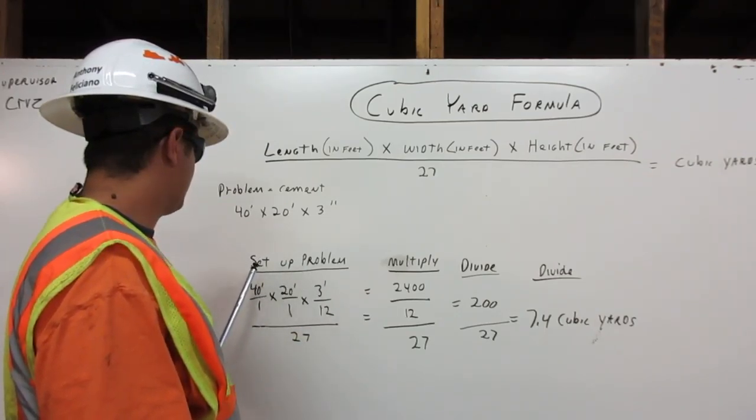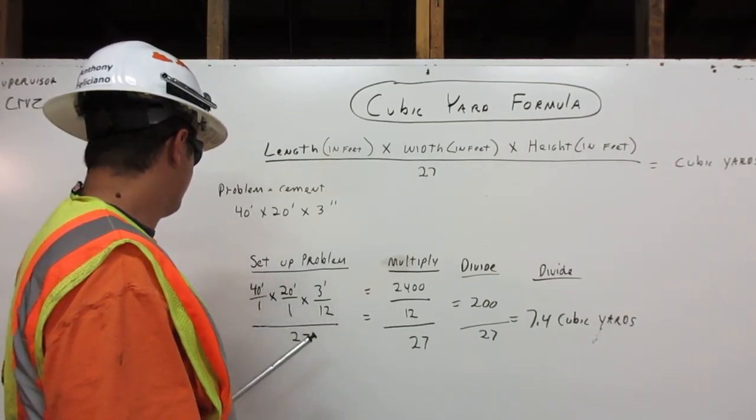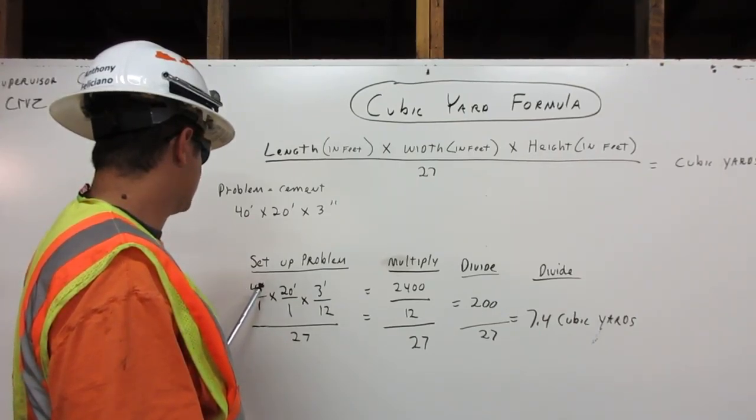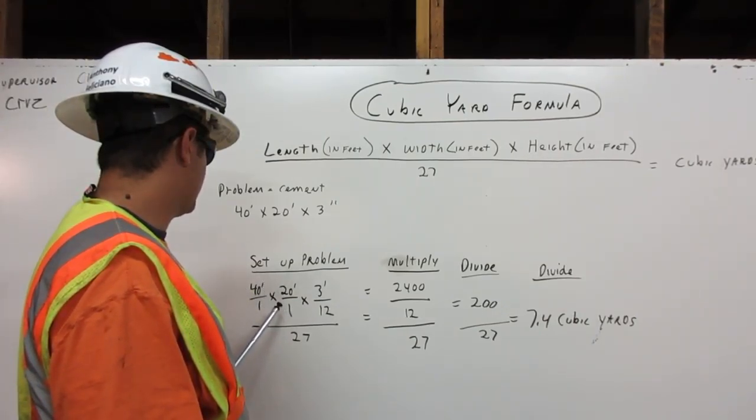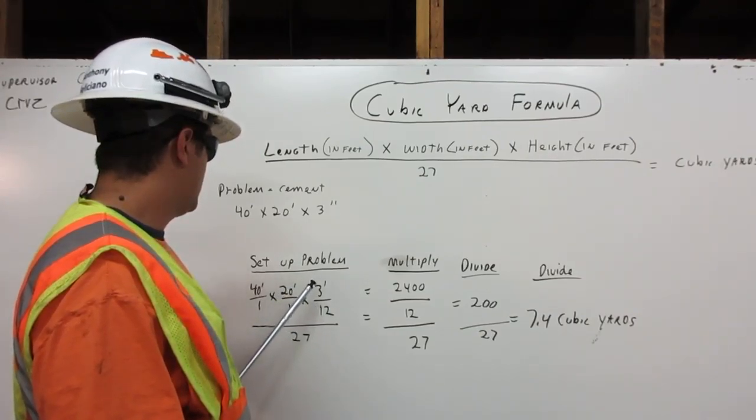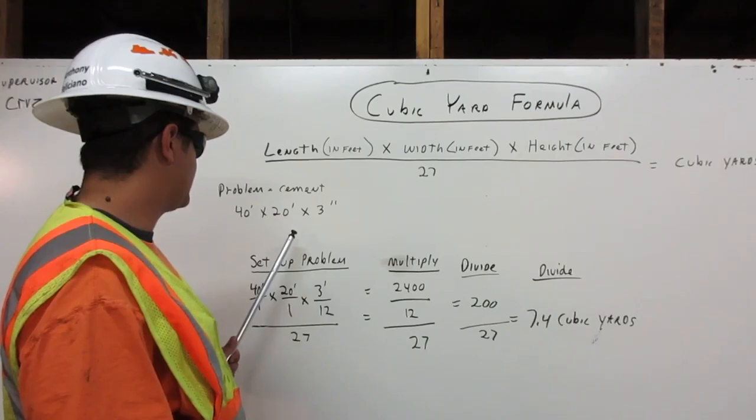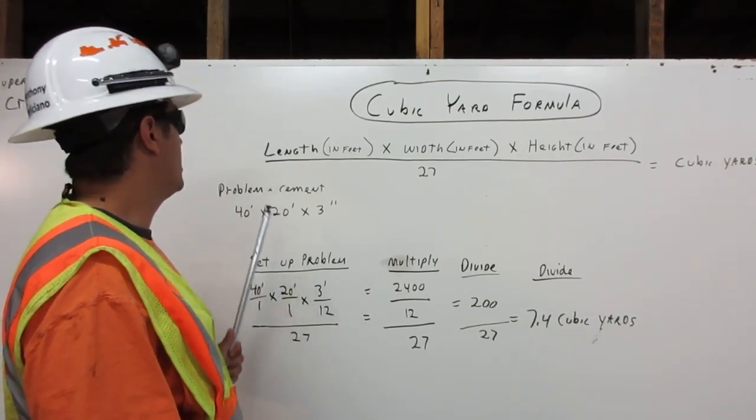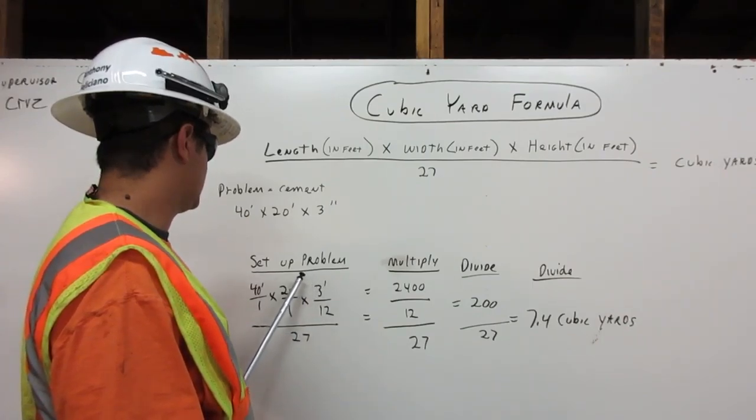Now we set up the problem. We put 40 feet over 1 times 20 feet over 1 times 3 over 12. We get 3 over 12 from the 3 inches, so it is 3 feet over 12.